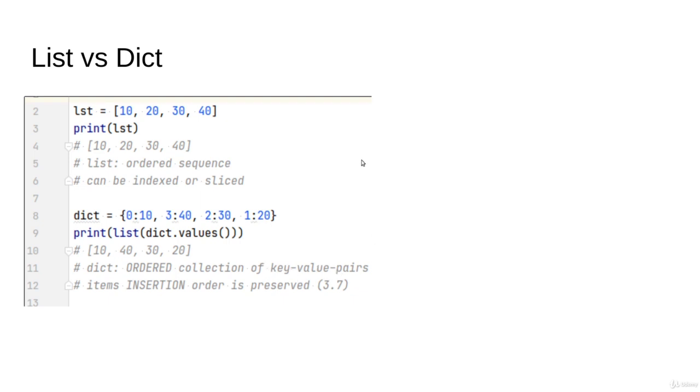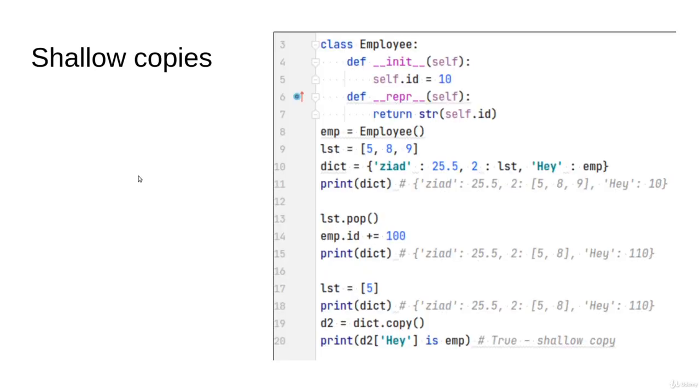Shallow copies - it's very important. Like many things in Python so far, when we take a copy we are actually making a shallow copy. Let's say we have an Employee object and a list object, and the dictionary here has an object in the list and has the object 'emp' here as part of the values. So we can print both of them. If you try to pop an item from the list or change the ID of the employee, this is going to be reflected in the original dictionary itself, so the values will be changed.